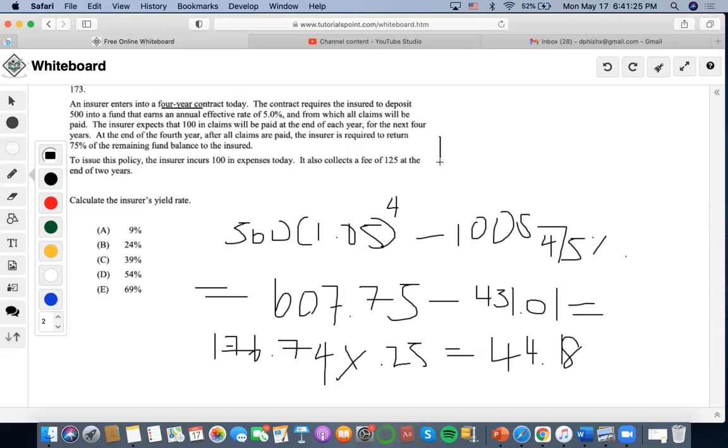Now it says to issue this policy, the insurer incurred 100 in expenses today. And then it collects a fee of 125 at the end of two years, and manages to receive the 25% of the four-year contract of 44.18.